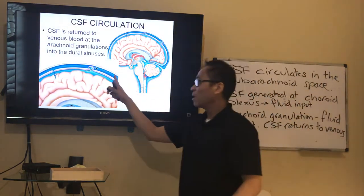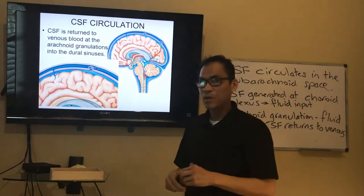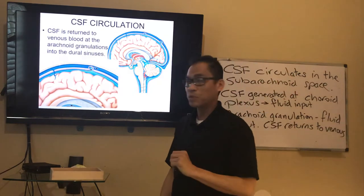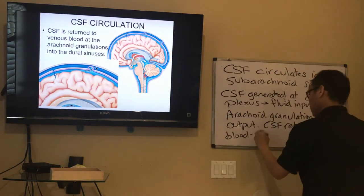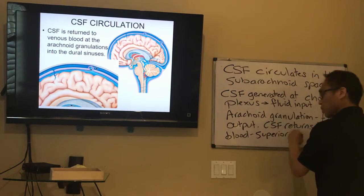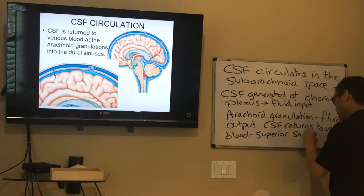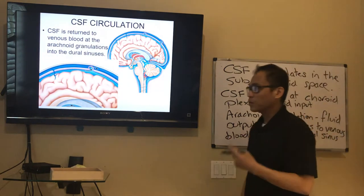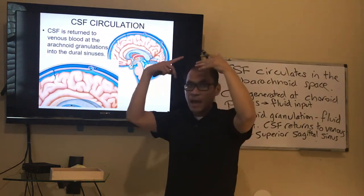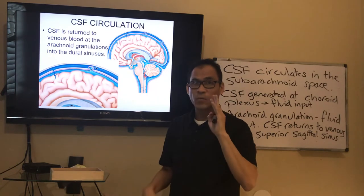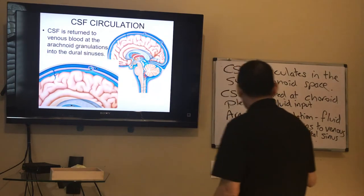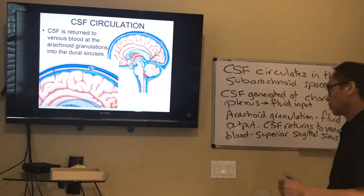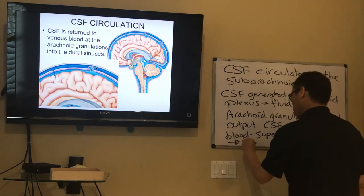The name of this structure is the superior sagittal sinus. It's right here in the middle, between the two cerebral hemispheres. There are other dural sinuses of the brain, and they all drain out of the brain into the neck through the internal jugular vein. All dural sinuses lead to the internal jugular vein.